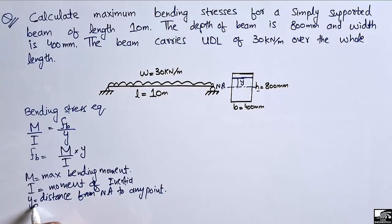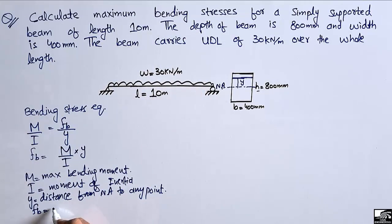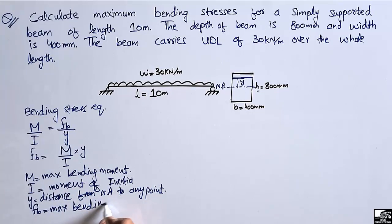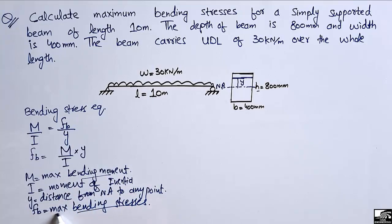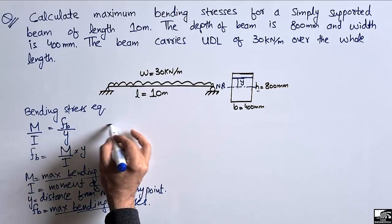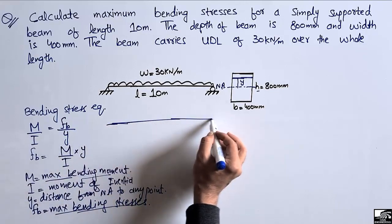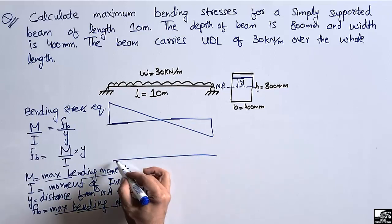Since fb is the maximum bending stress in this case, the bending stresses depend on the bending moment diagram. To find the maximum bending stresses we must find the maximum bending moment value. For a simply supported beam, the shear force diagram and bending moment diagram will have characteristic shapes.